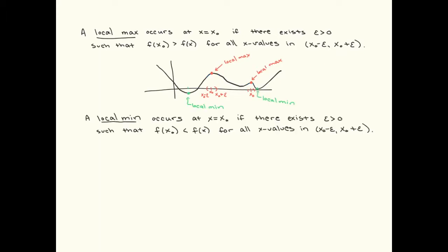We also have a couple of local mins on this graph. The local min might not be the smallest value on the entire graph, but it is the smallest value compared to its nearby neighbors — that's what the epsilon is for. As long as there's a small neighborhood from x minus epsilon to x plus epsilon where the height of the function is the smallest, that's how you get a local min. In other words, it's a little dip in the function.